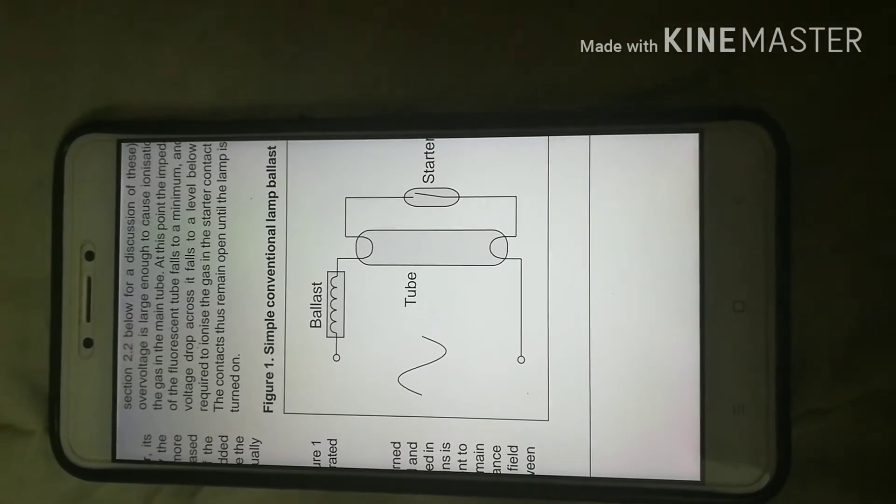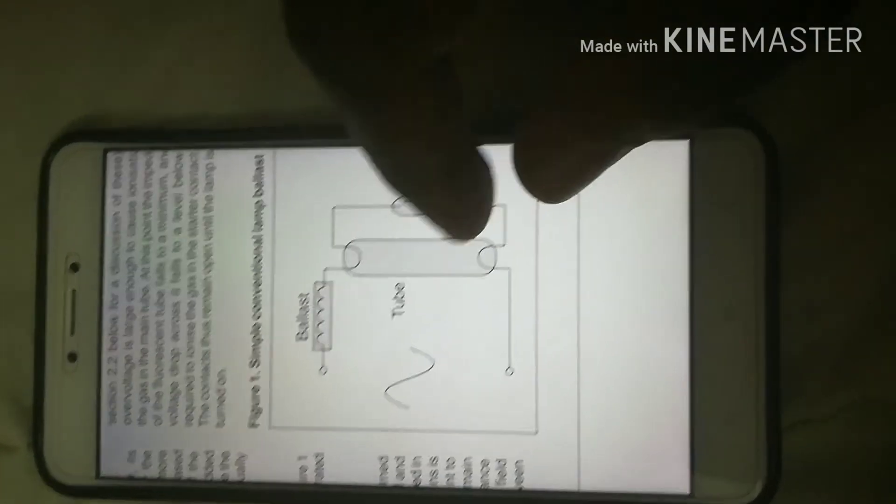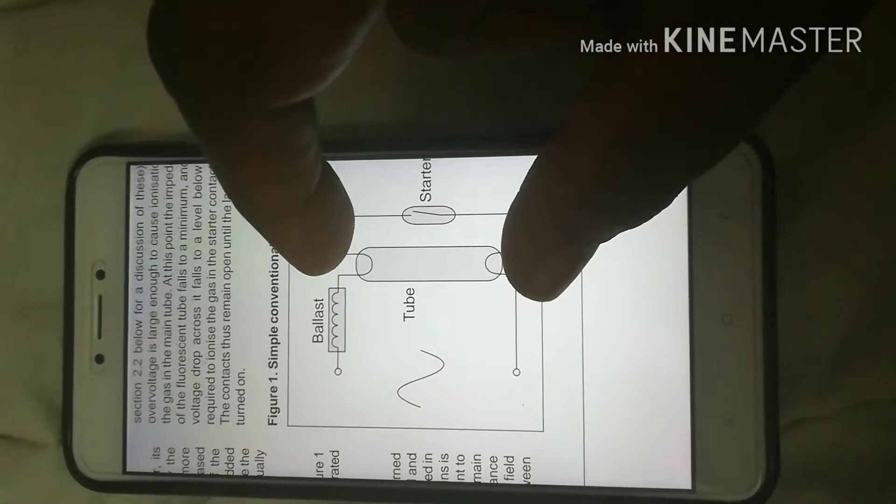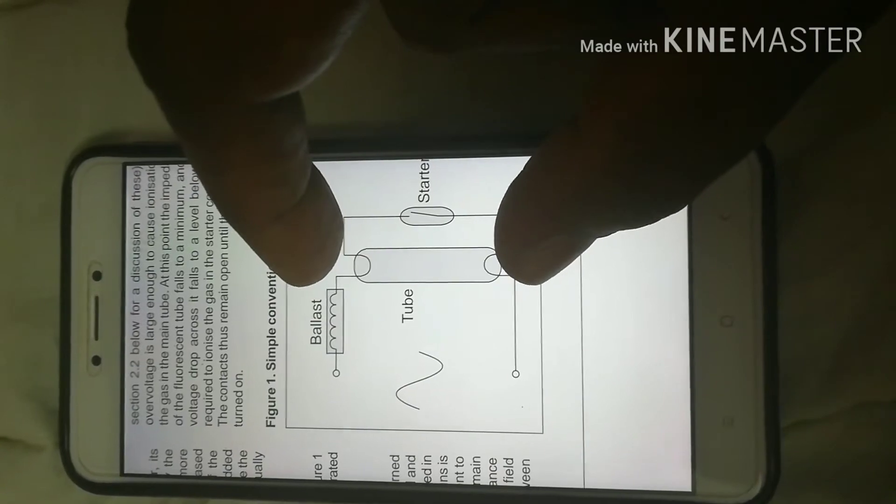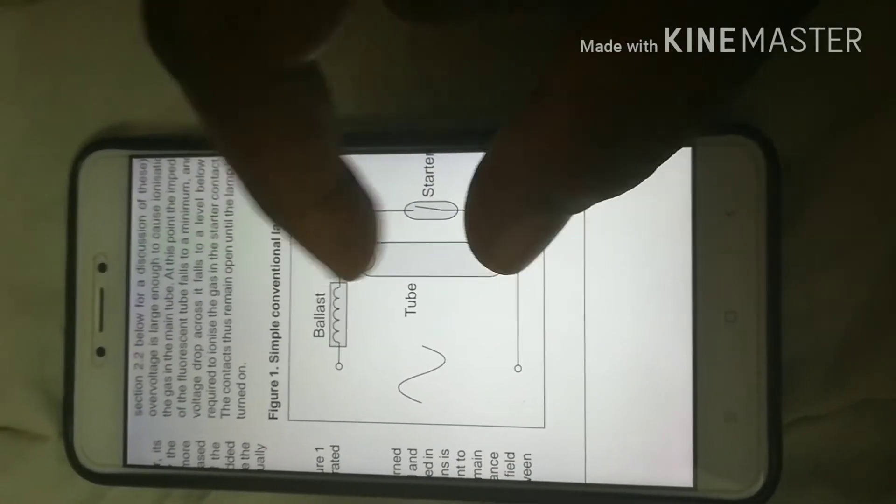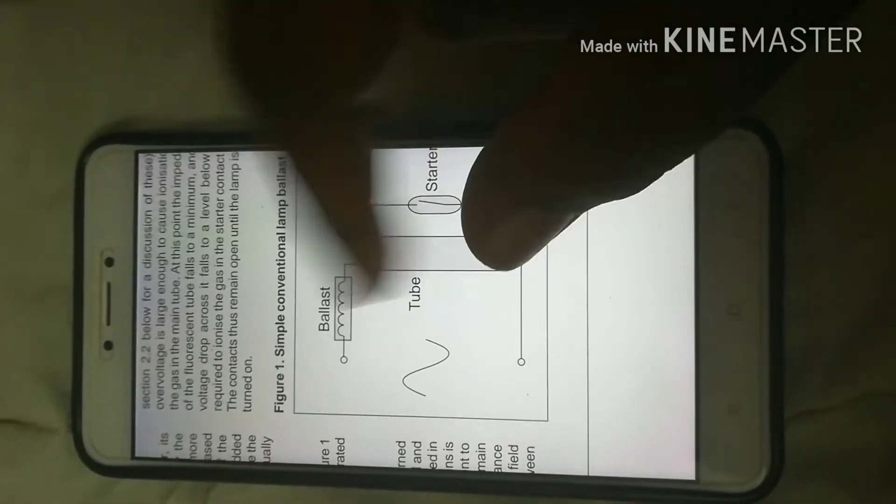But for that, initially, for the electricity to pass through this one, because when the tubelight initially starts, this particular tube is not conductive actually. So there is an open circuit here.